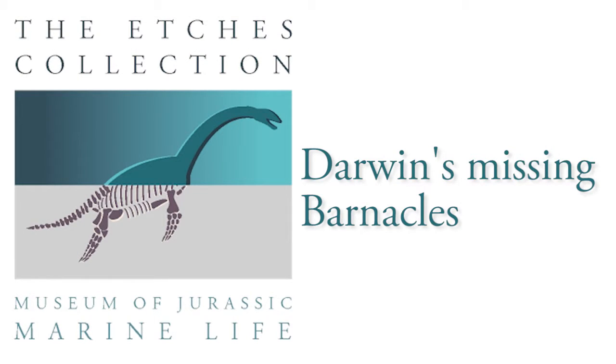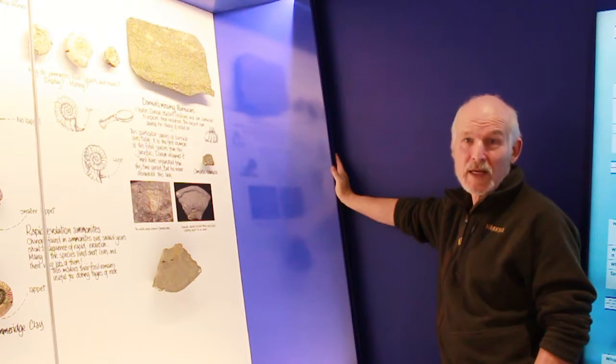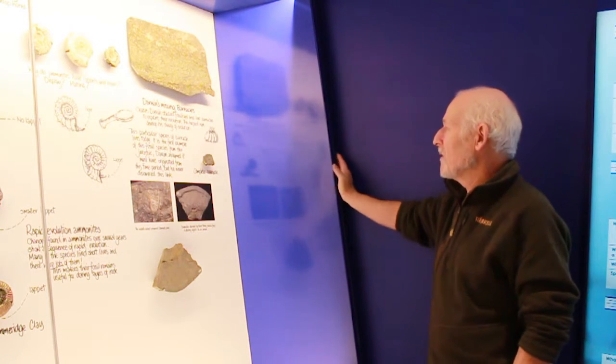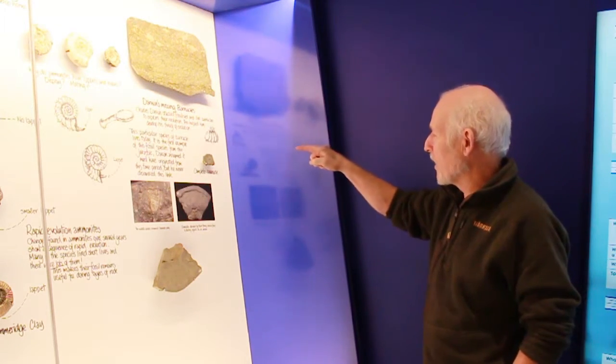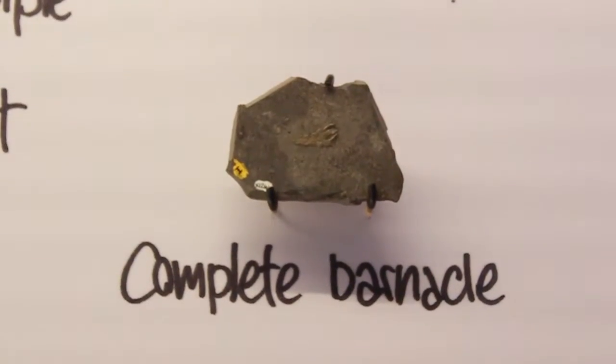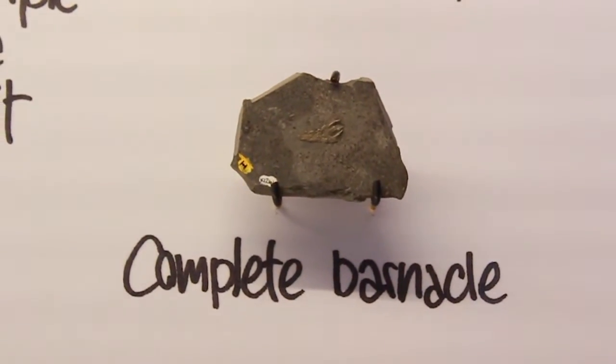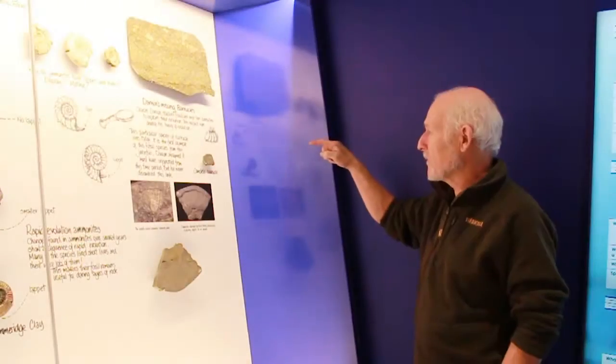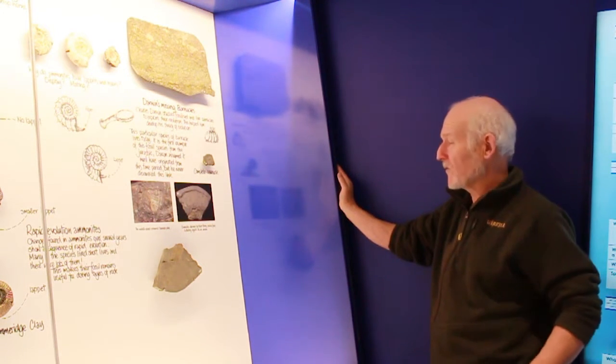So barnacles, to me the barnacles are the most interesting fossils actually in the collection really. No one ever paid any attention, me included. When I found this complete barnacle here, it's Corgettius Lepus Durotrigensis, I knew what I found - a goose barnacle, and I thought that's quite a rare specimen.